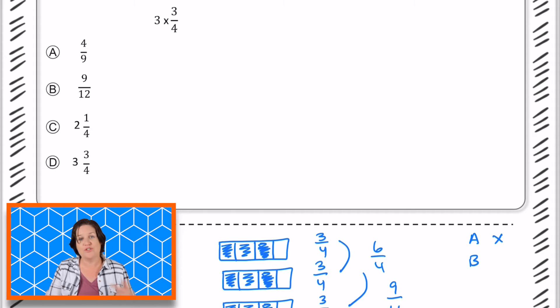B says 9/12, but we need an answer that says 9/4. And now we have a mixed number for C and D. We have 2 and 1/4, and 3 and 3/4.